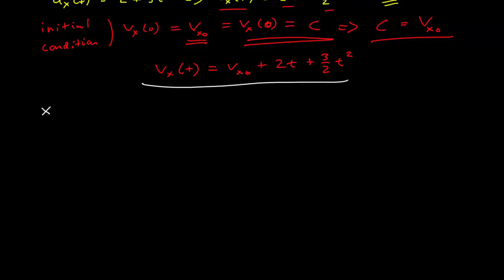If I want the position function, it's now the anti-derivative of this function. So that's this constant, v sub x0, the initial velocity, times t. The anti-derivative of a constant.